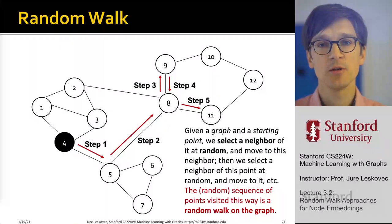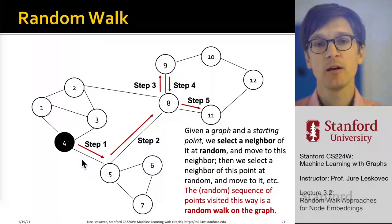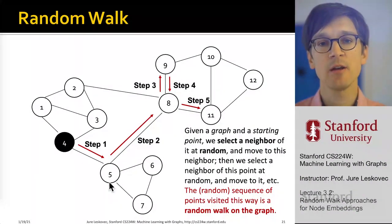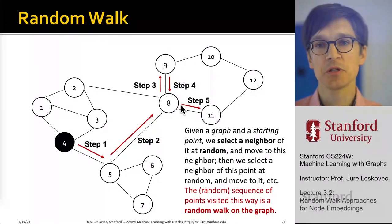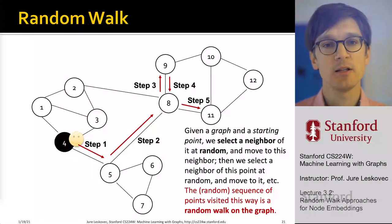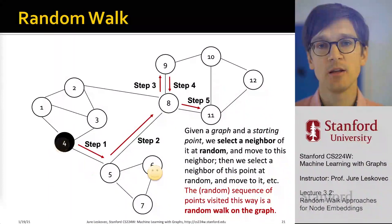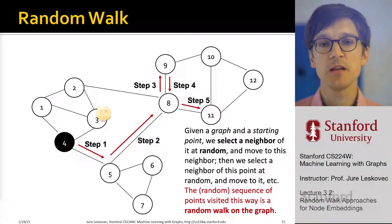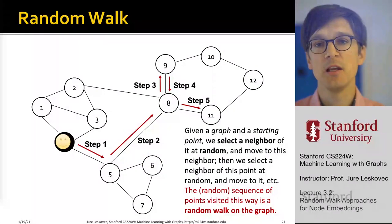A random walk is simply a process on top of a graph where we start at some node and then, out of the outgoing neighbors of that node — in this case 1, 3, and 5 — we pick one at random and move to it. This is one step of a random walk. Now at node 5, we have four different ways to go: return back to 4, or go to 8, 6, or 7. We pick one at random and move there. This process continues for a fixed number of steps. The random walk can traverse the same edge multiple times, return, go back and forth — it's a sequence of nodes visited this way across the edges.